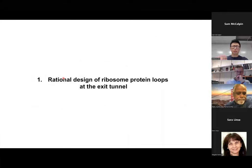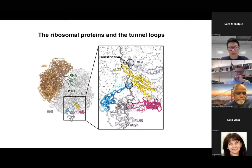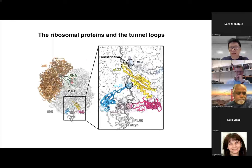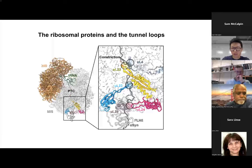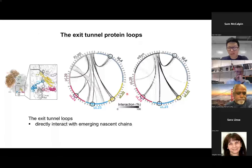First, how we rationally designed these ribosomal mutants, particularly the ribosomal protein loops at the exit tunnel. This is the structure of 70S ribosome of E. coli. You can see a small subunit, large subunit, tRNA and PTC — peptidyl transferase center — where the nascent polypeptide is synthesized. A nascent chain comes out of the ribosome through this exit tunnel. At this exit tunnel, there are four ribosomal proteins that have loops that protrude into the tunnel. These protein loops directly interact with emerging nascent chains.